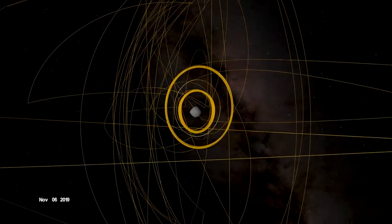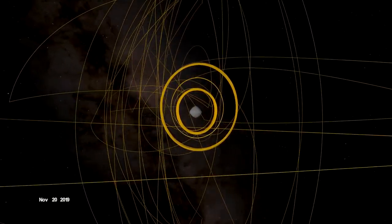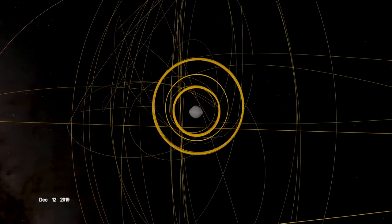OSIRIS-REx concluded its first year at Bennu back in orbit, circling the asteroid's terminator, or boundary, between day and night.